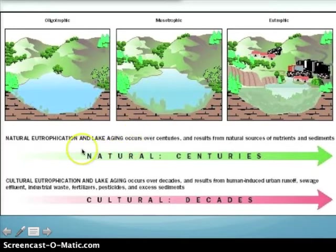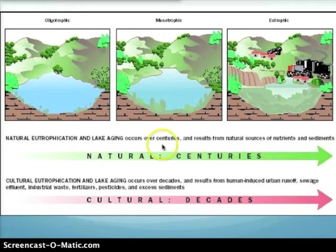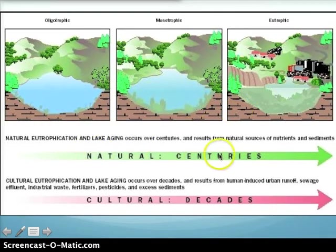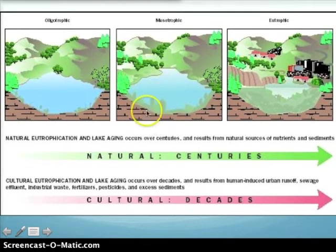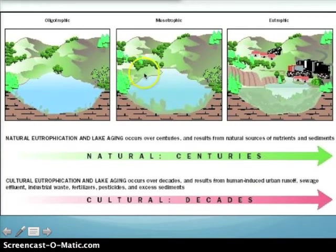Moving on to surface waters: an important concept is eutrophication and nutrient levels in lakes. Lakes are classified based on how much primary production is occurring. An oligotrophic lake is clear with little sediment and low turbidity — indicating very few nutrients. A mesotrophic lake has a fair amount of sediment and dissolved solids, with more nutrient-rich water due to runoff over time.